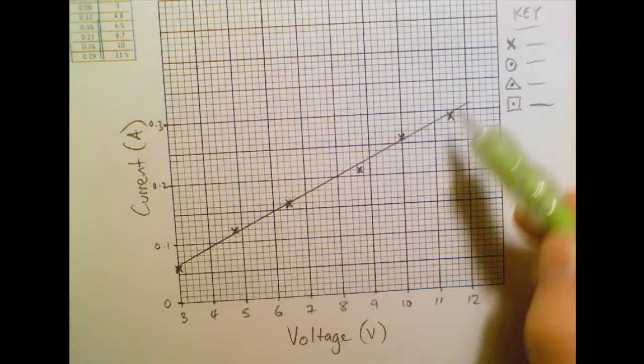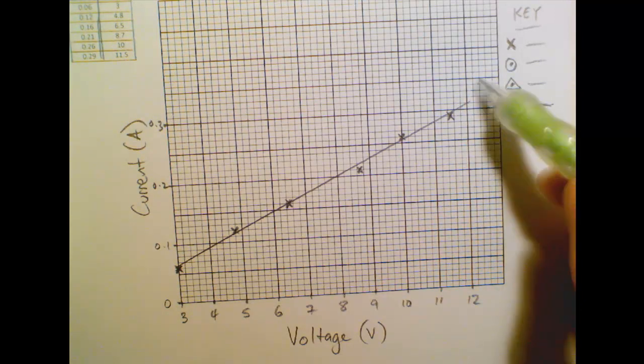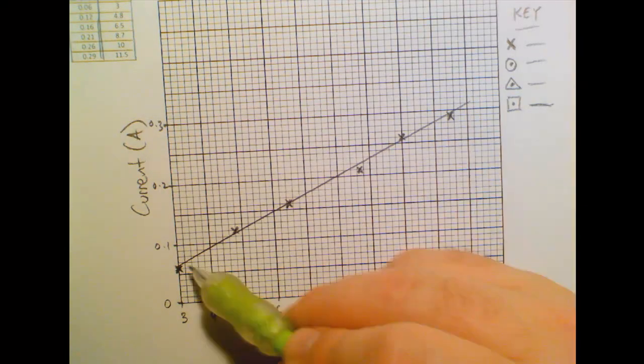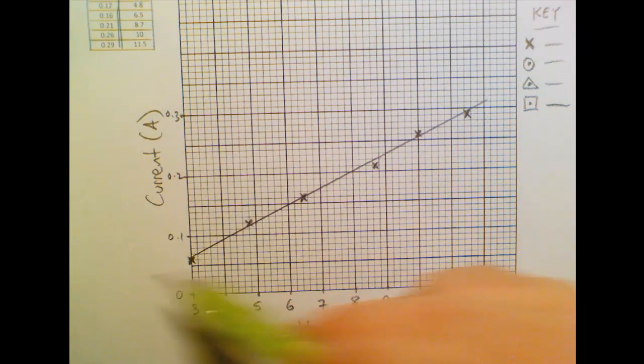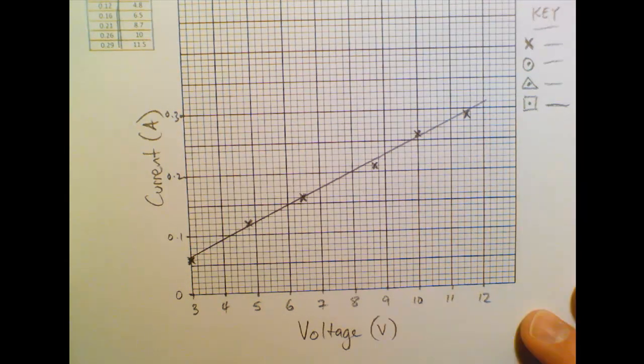But notice, though, that I didn't go any further than the points themselves. So out here there are no points, so I shouldn't go any further there. And back here there are no points either, so I shouldn't go there. So there's my line.